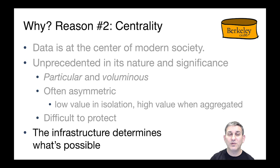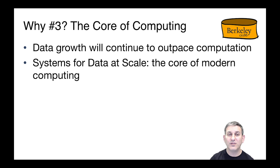Summing up, reason number two for why to take this course: the centrality of data is key to the importance of the class. This class is about data infrastructure, and fundamentally the infrastructure determines what's possible. A third reason to take this class is that it is the core of modern computing. Data growth continues to outpace the growth of computing — there's more data faster than there are faster processors — and systems for data at scale are increasingly the core of what we're doing with computer science.